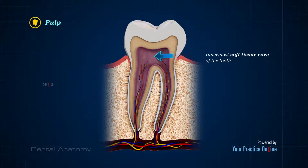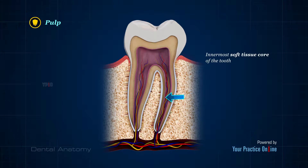Pulp is the innermost soft tissue core of the tooth, which consists of blood vessels, nerves, and connective tissue. The pulp is supplied through narrow canals in the roots that lead to openings at the root tips.